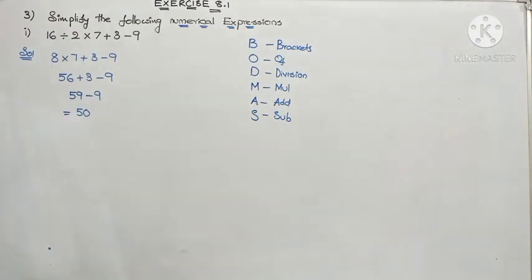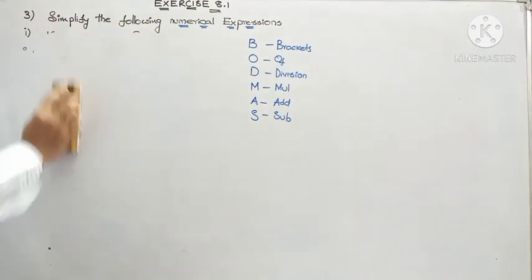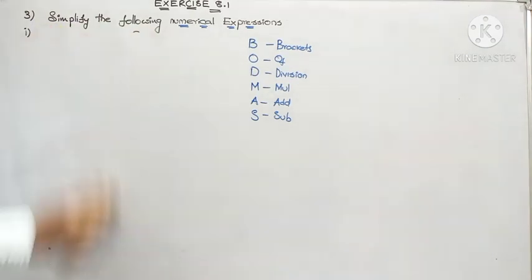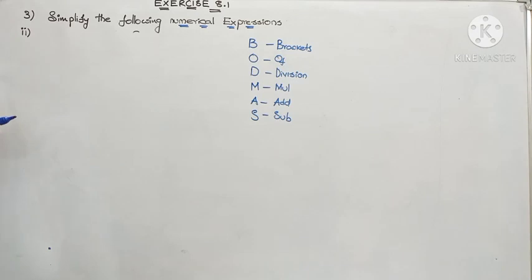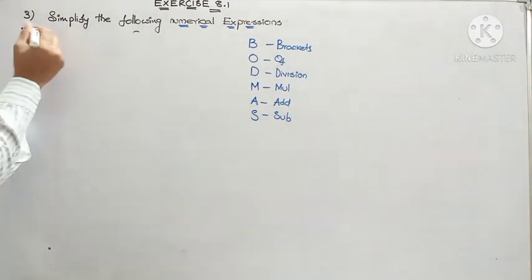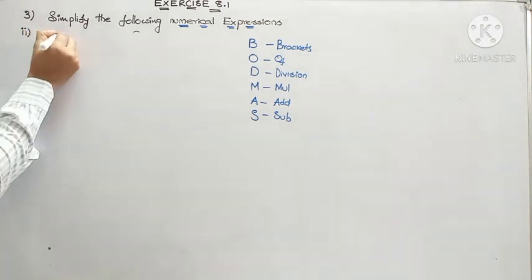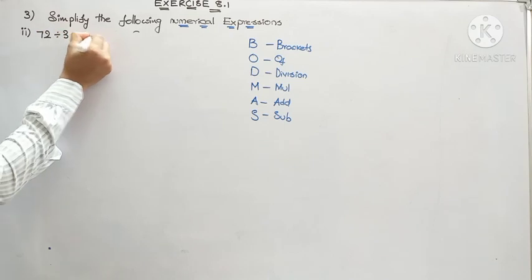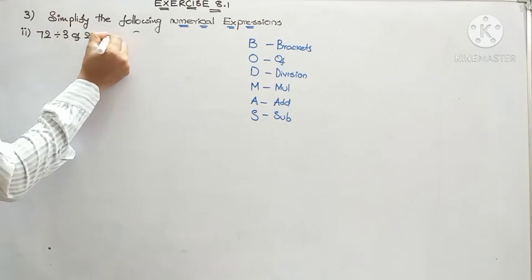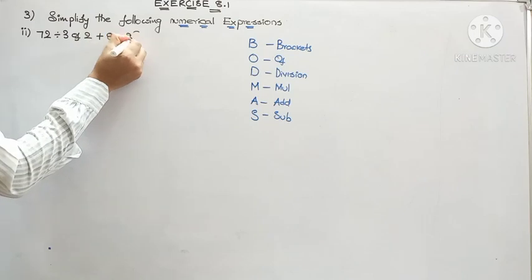Now I am moving to the second question of the same exercise. Learn the steps very carefully. The question is: 72 ÷ 3 of 2 + 8 - 3.